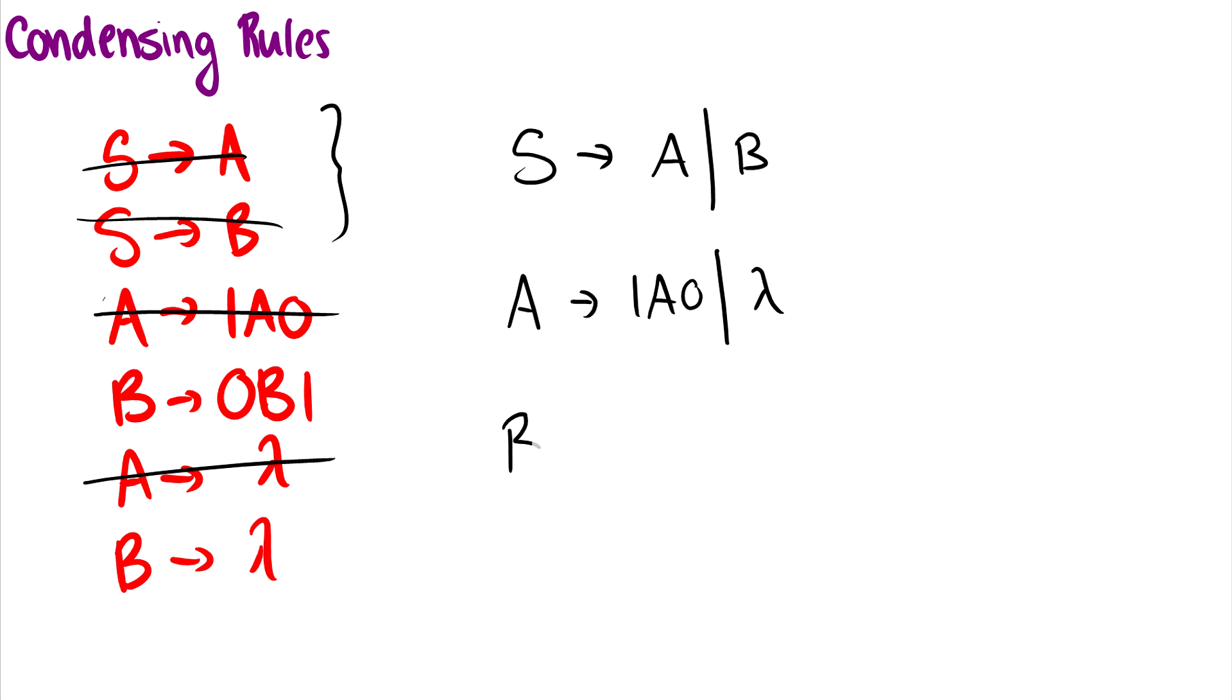And then with B, B can either go to 0B1 or it can go to lambda. So that's condensing rules.